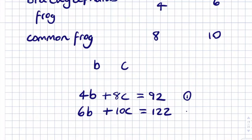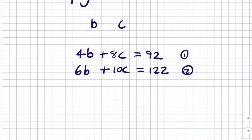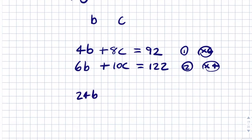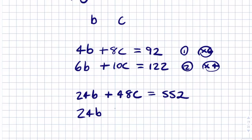Now we've got two equations. We solve them by elimination — multiply the first equation by 6 and the second by 4 to cancel out the B terms. That gives us 24B + 48C = 552, and 24B + 40C = 488.